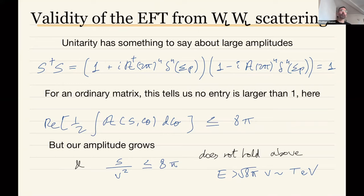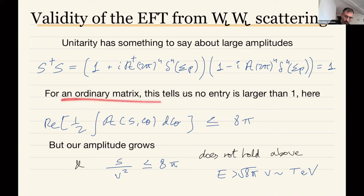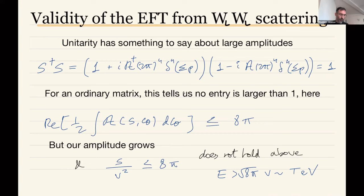This quantity of unitarity, connected to probability conservation, is something you might be more familiar with from quantum mechanics, where the evolution of any system is the exponentiated Hamiltonian, which is itself Hermitian. The exponential of a Hermitian matrix gives you a unitary matrix, meaning no element of the matrix is larger than one. When applied to the S-matrix in the space of in and out states and momenta, it is a bit more complicated.